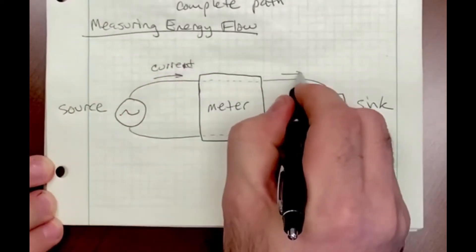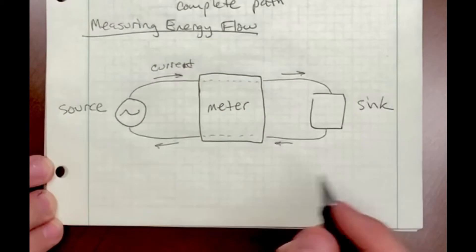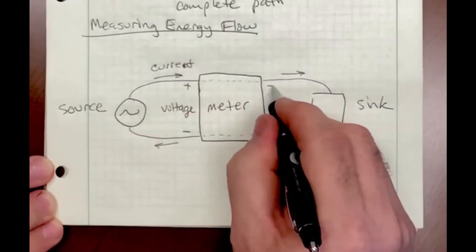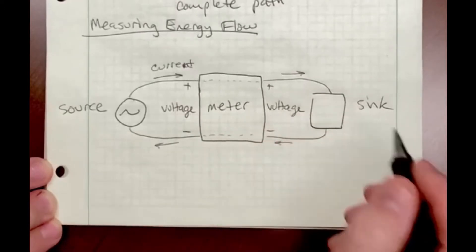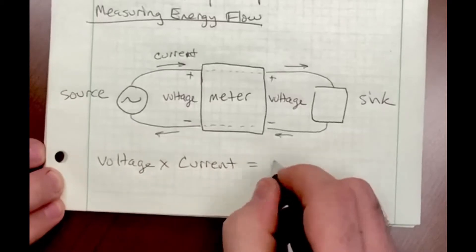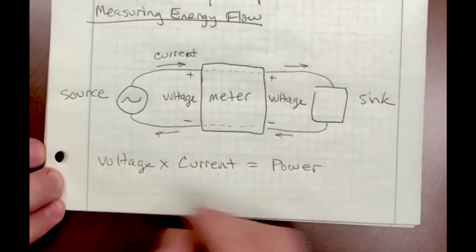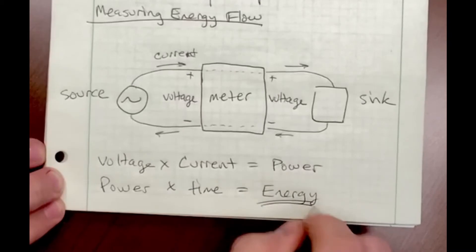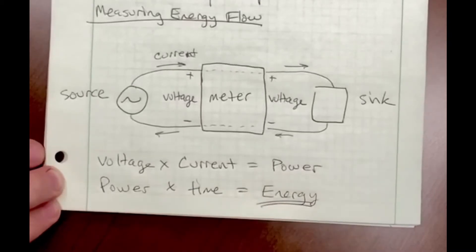Current flows around the loop just like in the previous illustration. There's also a voltage difference between the two conductors. If I multiply that voltage times the current, I get power, and the units of power are kilowatts or watts. Power times time gives me energy, which I measure in kilowatt hours.